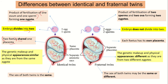The genetic materials and physical appearances of the two fetuses are the same, because they come from the same zygote. Their gender or sex is also the same — both twins have the same sex or gender.